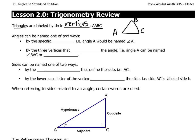Angles can be named by the specific vertex — that's the singular for vertices. For example, angle A is written as angle A. There's another naming system, and that is by the three vertices that form the angle. For example, angle A can be named BAC. In our triangle, BAC connects B to A to C. Or we could name it CAB, starting at C and connecting to A and then to B.